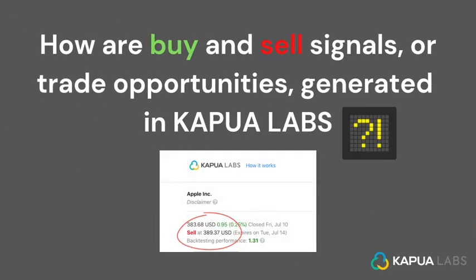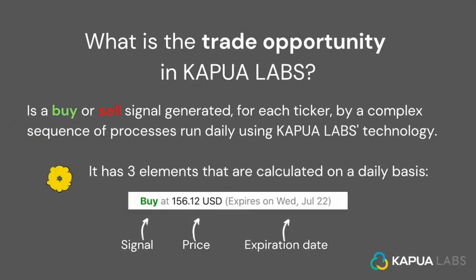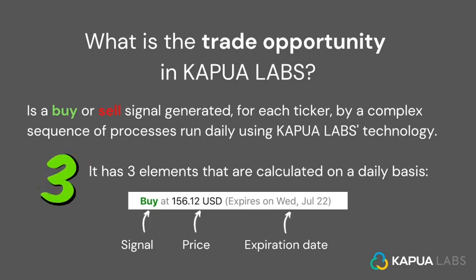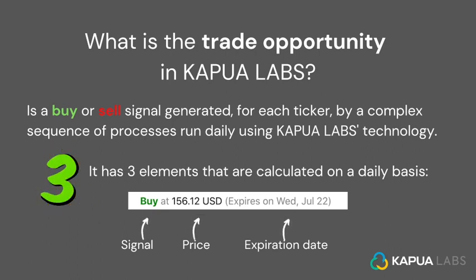How are buy and sell signals or trade opportunities generated in Kapua Labs? What is a trade opportunity in Kapua Labs? It's a buy or sell signal generated for each ticker by a complex sequence of processes run daily using Kapua Labs technology. It has three elements that are calculated on a daily basis: the signal, a price, and also an expiration date.